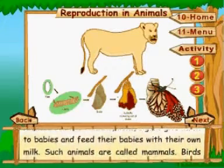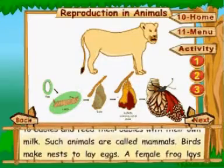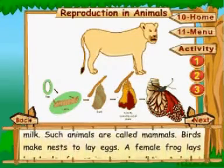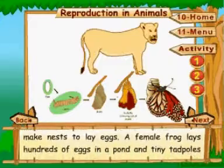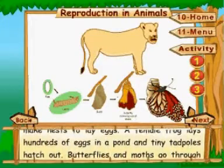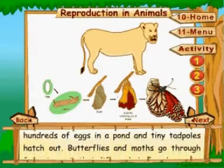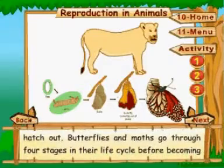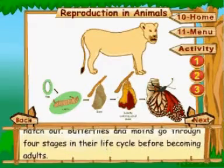Reproduction in animals. Animals such as humans, lions, and tigers give birth to babies and feed them with their own milk. Such animals are called mammals. Birds make nests to lay eggs. A female frog lays hundreds of eggs in a pond and tiny tadpoles hatch out.